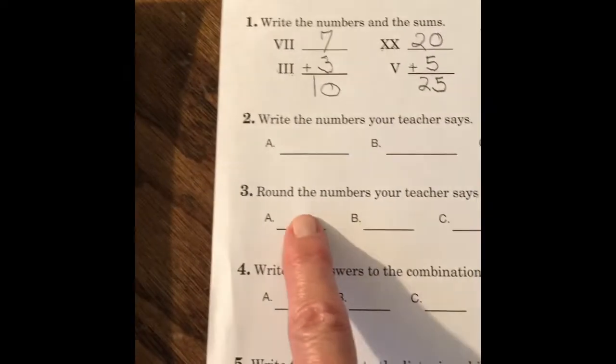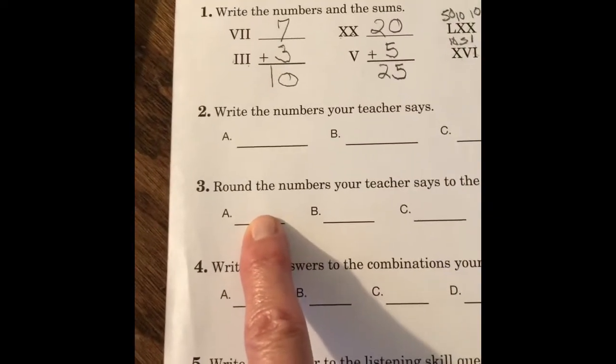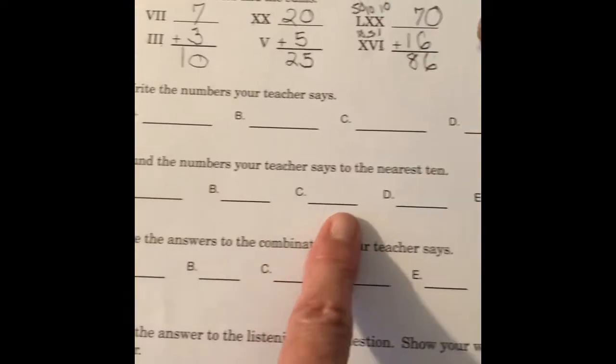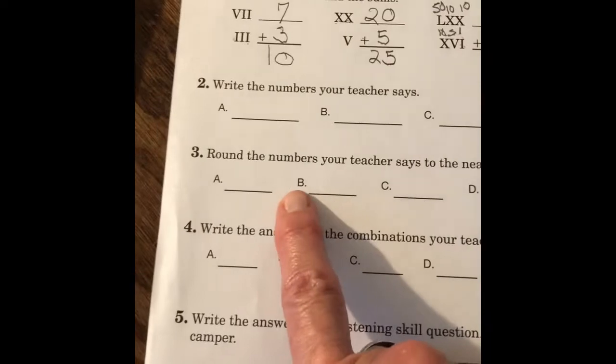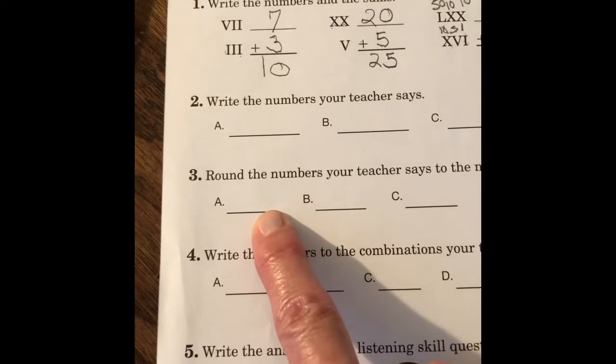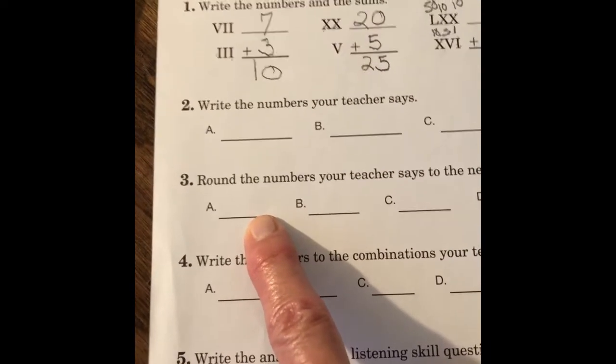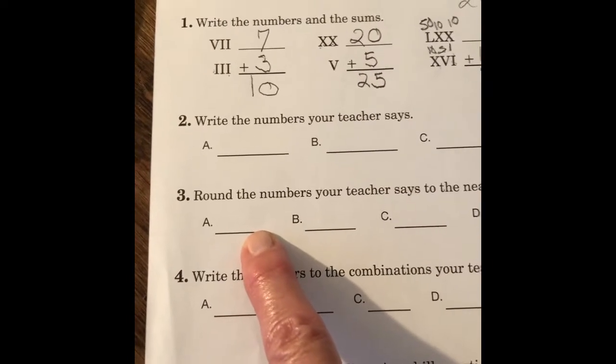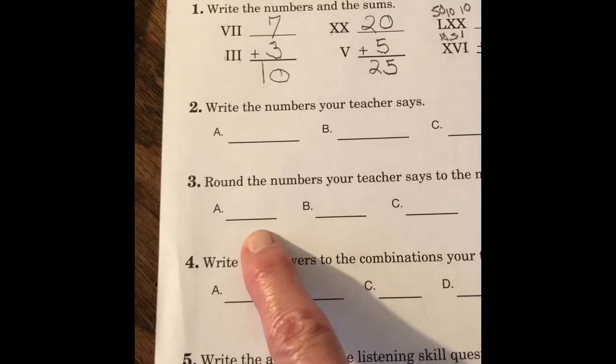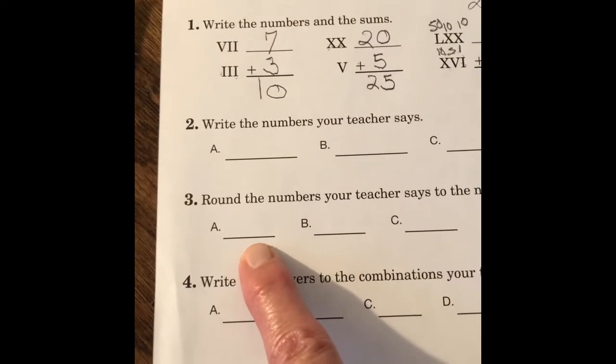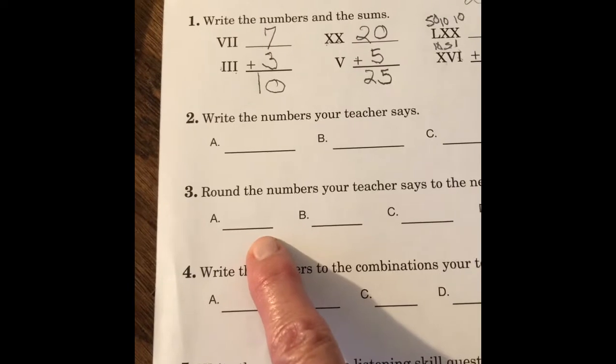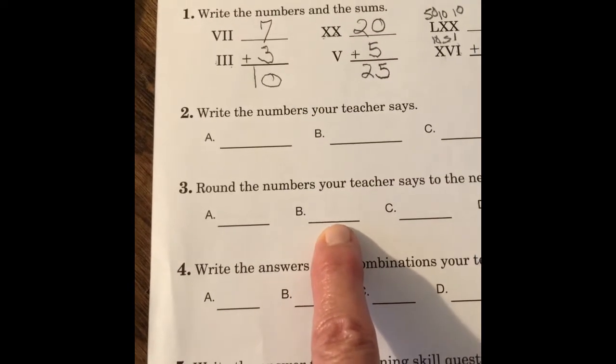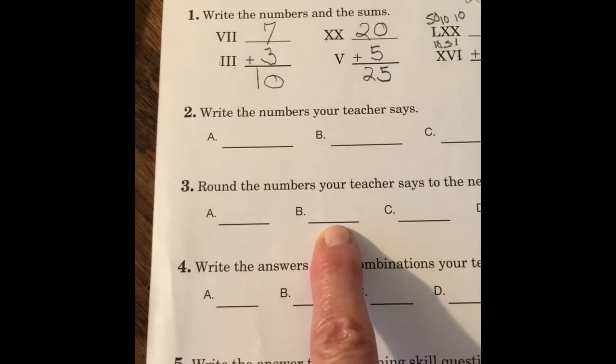Okay, let's go down to number 3. Round the numbers that your teacher says to the nearest tens. We've been doing this for two days now. Rounding to the nearest tens. Okay, I'm going to say a number, and you're going to round it off to the nearest tens. A, the number is 58. 58.